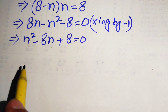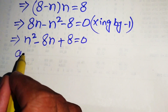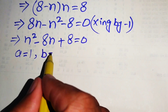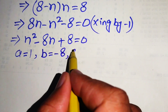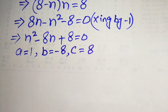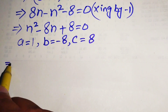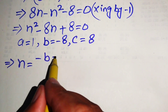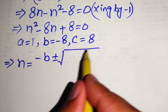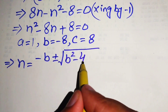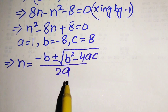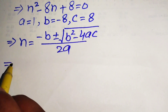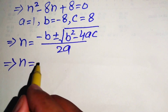First we write the coefficients of this equation. The coefficients are a equals 1, b equals minus 8, and c equals positive 8. Our quadratic formula is written as n equals minus b plus or minus square root of b squared minus 4ac, divided by 2a. We substitute all the values of a, b, and c.